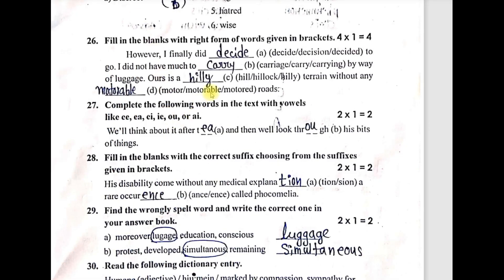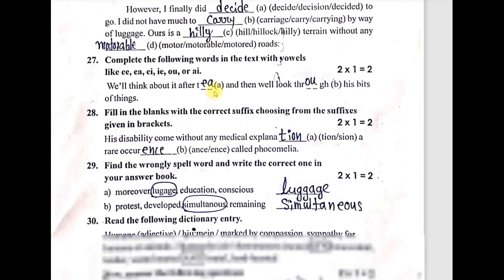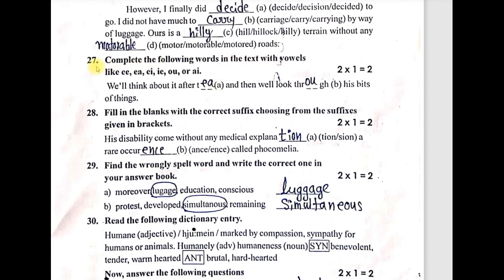Fill in the blanks with the right form of words. 'Finally did dash' — right answer: decide. Second one: 'I did not have much to dash' — right answer: carry. Next: 'hours is a hilly terrain without any dash roads' — right answer: motorable roads. For oval clusters spelling question 27: thinking about two blanks after T — the word is 'tether.' Next word: through — T-H-R-O-U-G-H.